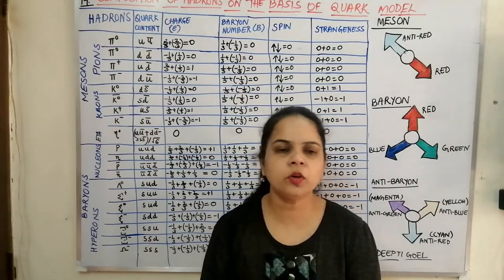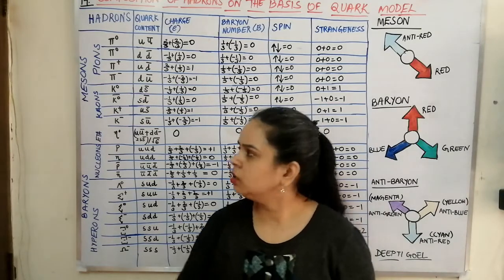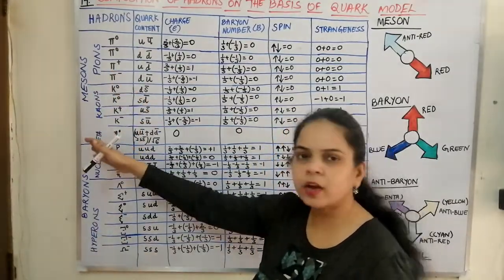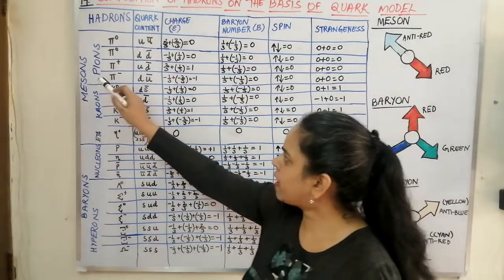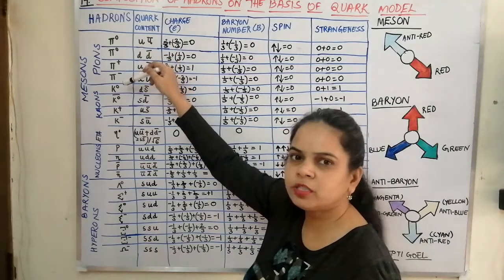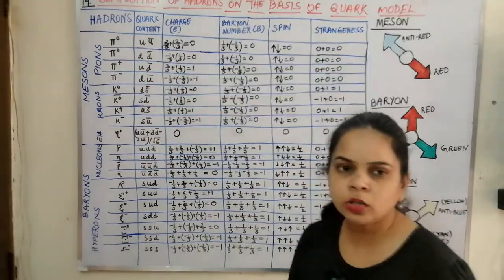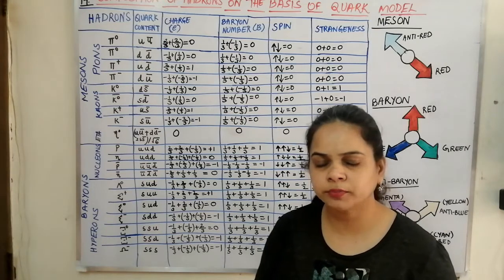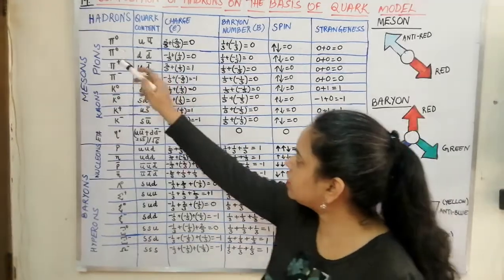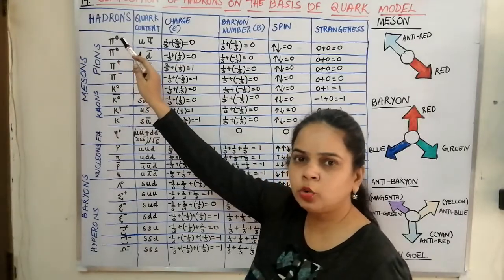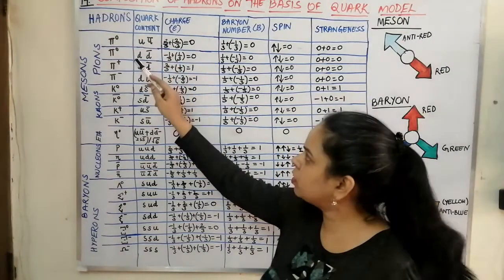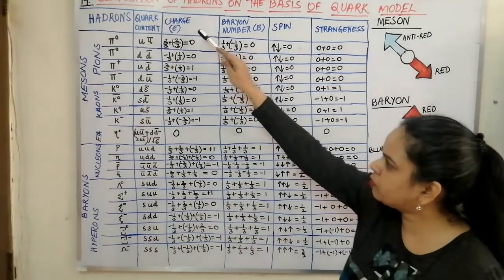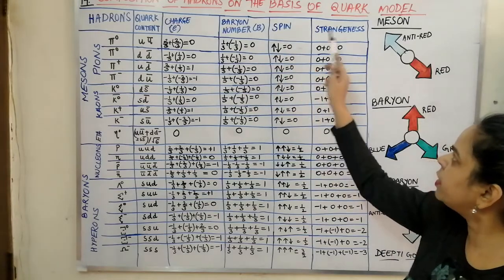Next is the composition of the hadrons according to the quark model. In hadrons we have mesons and baryons. In the meson family we have pions, kaons, and eta mesons. Pions are π⁰, π⁺, and π⁻. According to the quark model, mesons are formed by one quark and one anti-quark. π⁰ can be found as the combination of u·ū or d·d̄. This table discusses the charge, baryon number, spin, and strangeness of the various hadrons.